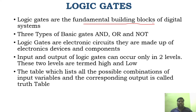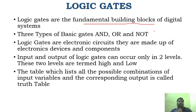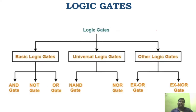In any electronic circuit, you will have logic gates. There are only two levels: level zero and level one, which can also be represented as high and low — two stable states. The table of possible combinations is called the truth table. Logic gates are classified as basic logic gates and universal logic gates.